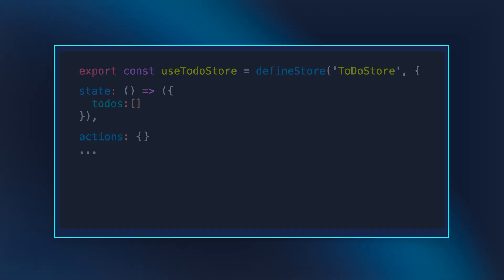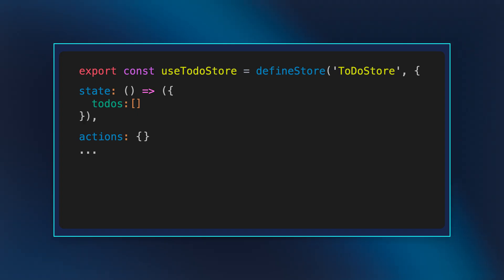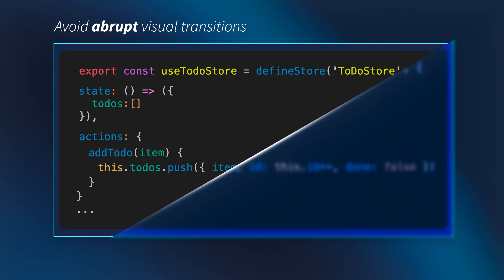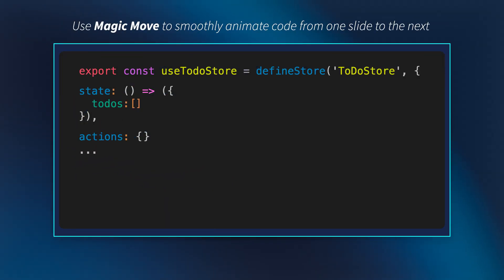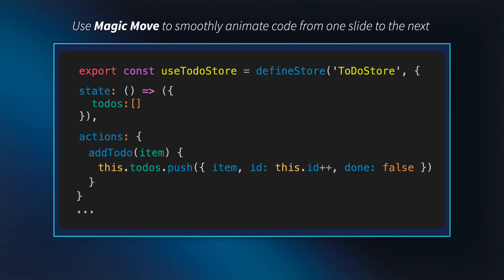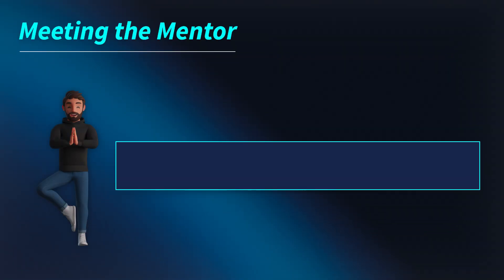Another common use case is animating code to retain context. Instead of jumping from one version of code to the other, we can retain context by leveraging things like the Magic Move slide animation in Apple Keynote, which smoothly rearranges objects from one slide to the next based on their positions. Remember, it's all about holding focus and directing it with precision and care to facilitate learning.